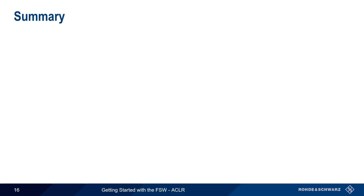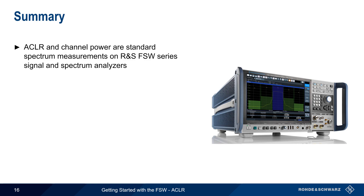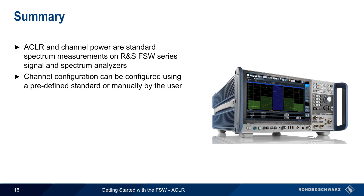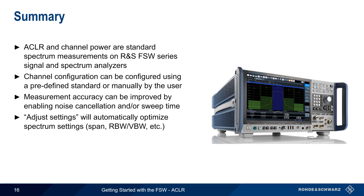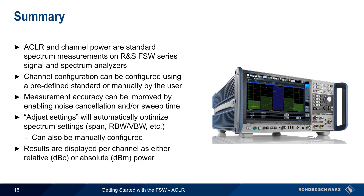ACLR and channel power are standard spectrum measurements supported on all Rohde & Schwarz FSW series signal and spectrum analyzers. The most important part of ACLR measurements is channel configuration, which can be done automatically using one of the FSW's predefined standards or by means of a user-defined standard. The accuracy of ACLR or channel power measurements can be improved by enabling noise cancellation and/or by adjusting the sweep time. Furthermore, the FSW's Adjust Settings feature will automatically optimize spectrum settings such as span, resolution and video bandwidth, etc., based on the defined channels. These can also be manually configured if needed. The channel power or ACLR measurement results are displayed in both graphical and numerical formats, with powers given either as relative or absolute values.